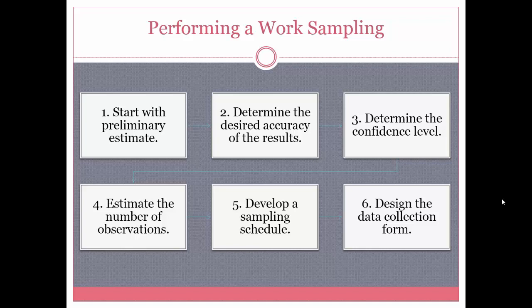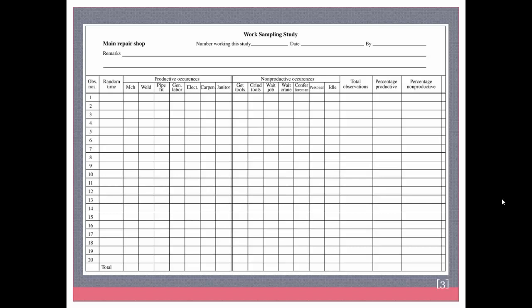Fifth, develop a sampling schedule — decide when and where observations will be done. Sixth, design the data collection form. Here is an example of a data collection form: across the top it lists all the different tasks for the specific process, and all occurrences are noted. From that you can calculate total observations and the percentage of productivity versus non-productivity.